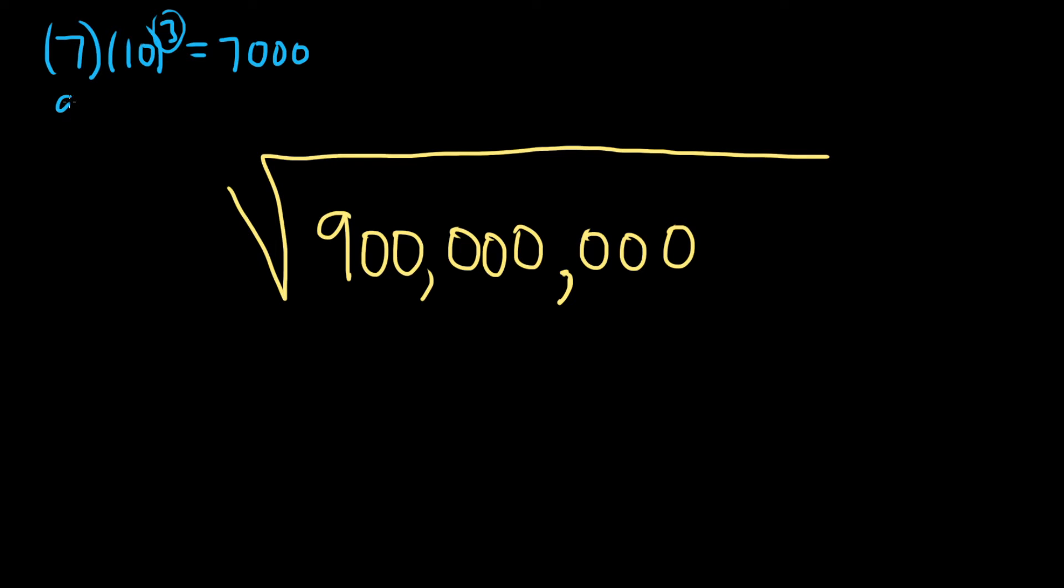If you have, say, 9 and you multiply it by 10 to the 5, well, you see the 5 here, this is just a 9 and then 5 zeros, so 1, 2, 3, 4, 5.